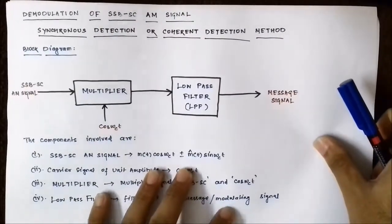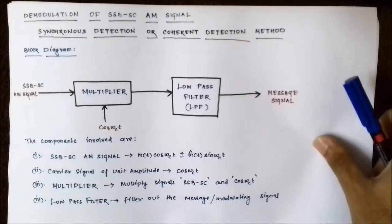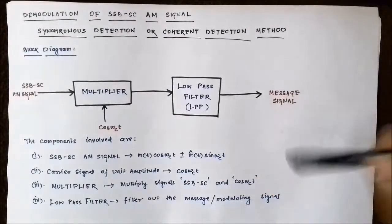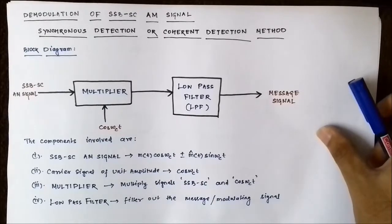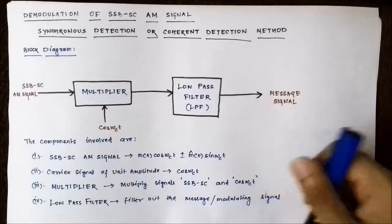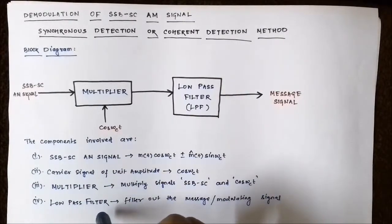Hello friends, welcome to Engineering Tutorial. In my previous video I discussed the generation of single sideband suppressed carrier amplitude modulated signal using the filter method (frequency discrimination method) and the phase shift method (phase discrimination method) — two methods in which only one sideband, either the lower or upper sideband, was passed while the carrier and the other sideband were suppressed. In this video we'll be discussing the demodulation, or extraction, of the original message signal from the SSB-SC amplitude modulated signal.